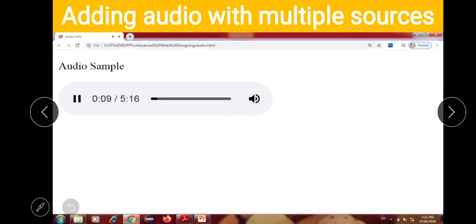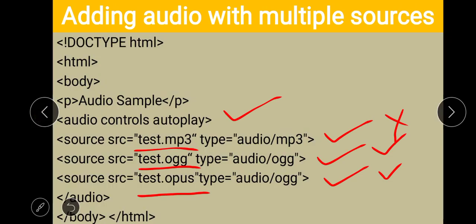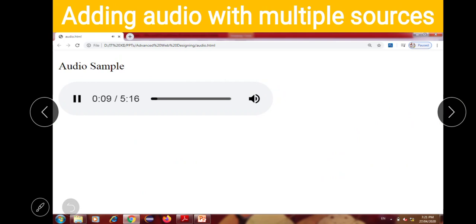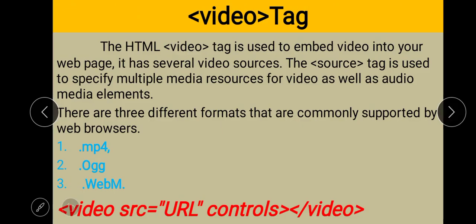Here they show the output of adding audio with multiple sources. If MP3 is supported by the browser, that file plays; if not, it falls back to the next source. A sample audio is played to demonstrate, and then we move on to the video tag.